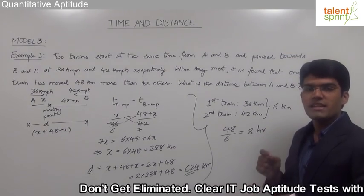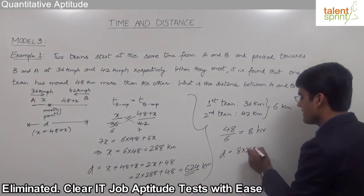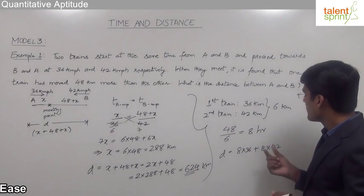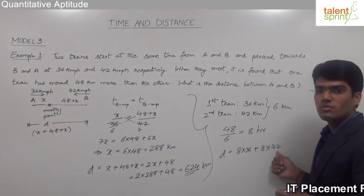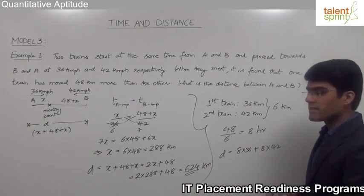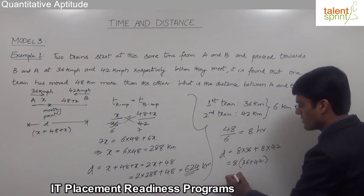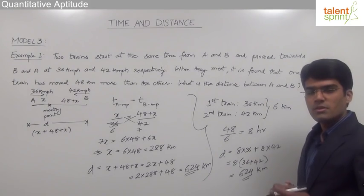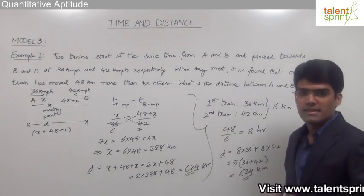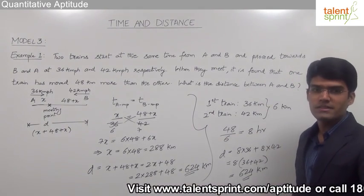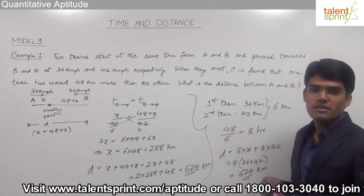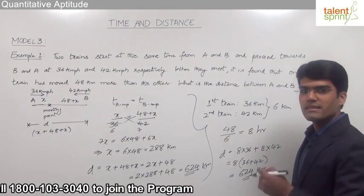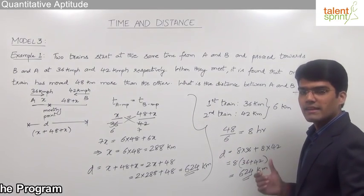Once we have the total time each train has travelled, we can find the total distance as 8 into 36 plus 8 into 42. The first train travelled 8 hours at 36 km/h, and the second train travelled 8 hours at 42 km/h. Taking 8 as common, we get 8 into 36 plus 42, which is 8 into 78, equal to 624 km. So the total distance is 624 km. The key is finding the difference per hour, dividing the total difference by it to get time, then multiplying time by total speed.